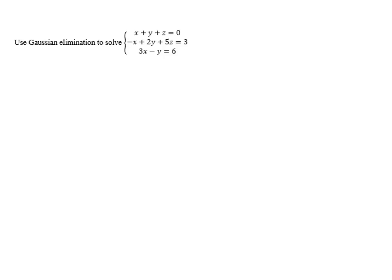Use Gaussian elimination to solve the system of equations: x plus y plus z equals zero, negative x plus 2y plus 5z equals three, and 3x minus y equals six.